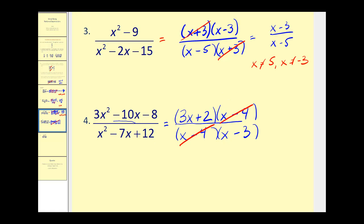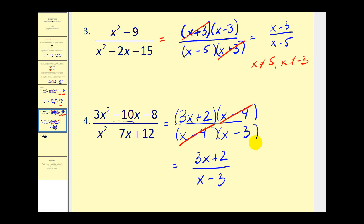This simplifies to 3x plus 2 over x minus 3, where x can't equal positive 4 and x can't equal positive 3.